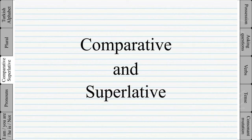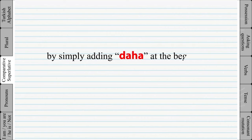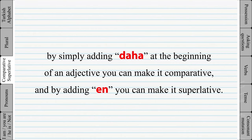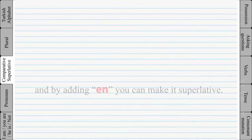Comparative and superlative. By simply adding 'daha' at the beginning of an adjective you can make it comparative, and by adding 'en' you can make it superlative.